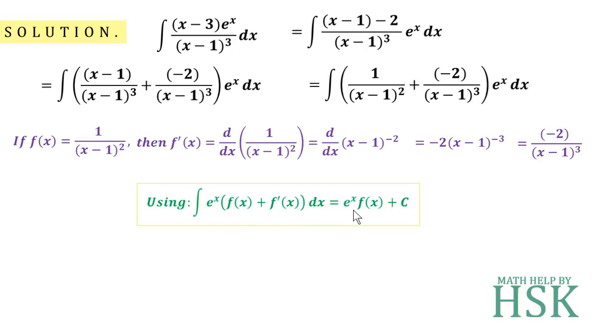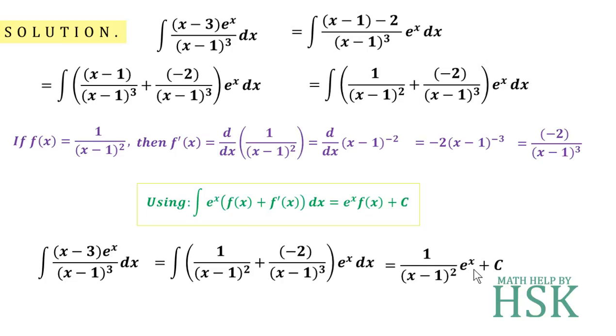Therefore, we can write x minus 3 upon x minus 1 whole cube into e to the power of x dx as equal to 1 upon x minus 1 whole square plus minus 2 upon x minus 1 whole cube into e to the power of x. Because it is in this form of function plus its derivative into e to the power of x, its value would be e to the power of x upon x minus 1 whole square plus c. That is my required answer.